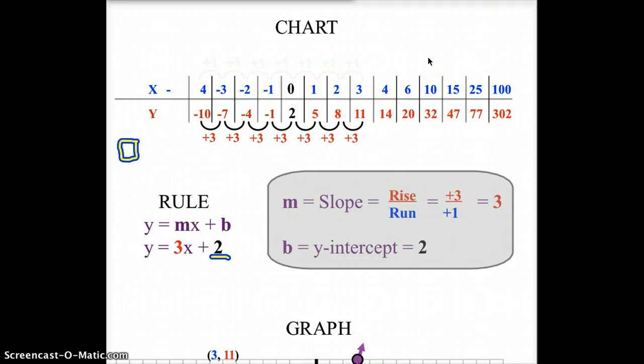Alright, let's talk about slope intercept. The rule for slope intercept, as we've been kind of getting after here, is right here. The main rule for this is y equals mx plus b.